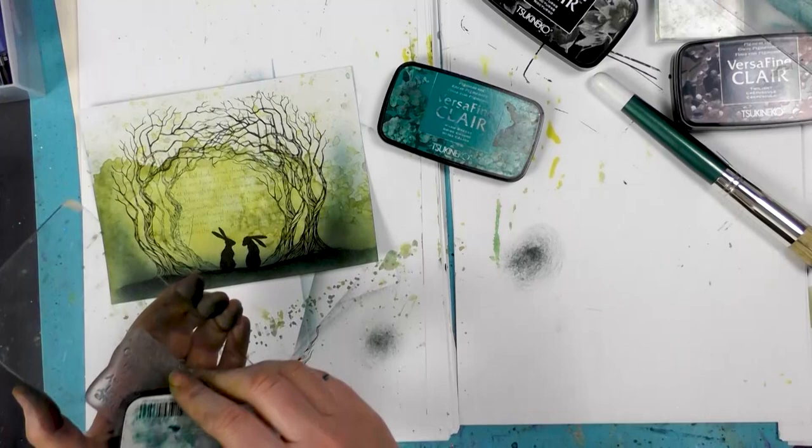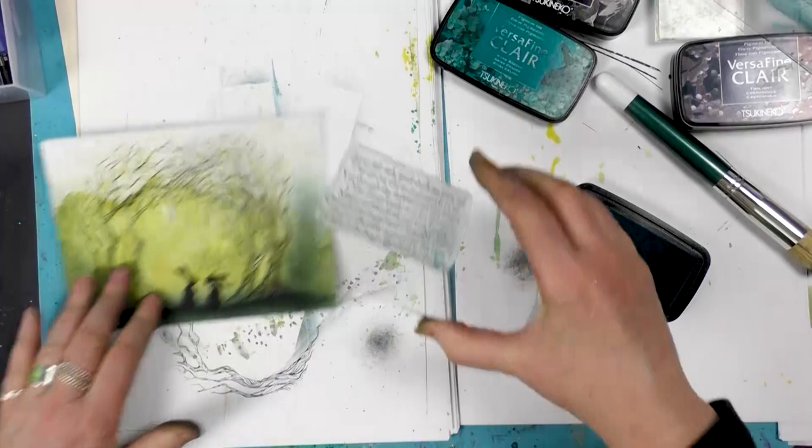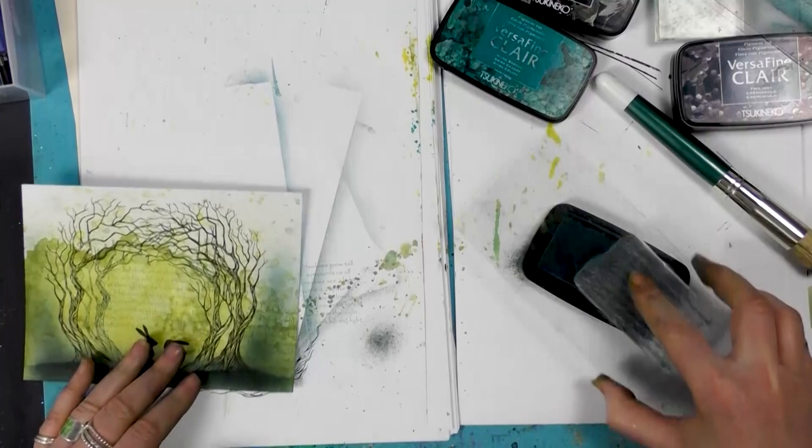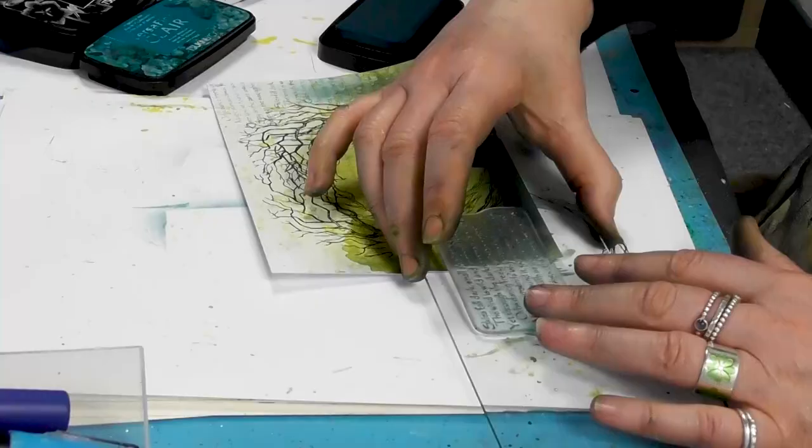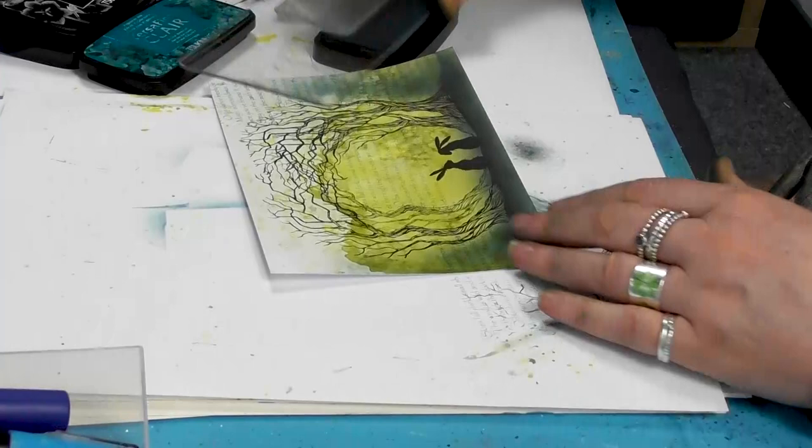And then we're going to ink up again, and this time I'm just going to take that around the edge. I want it to be nice and subtle, not too overpowering, which is why I've chosen the warm breeze. It's nice and light.